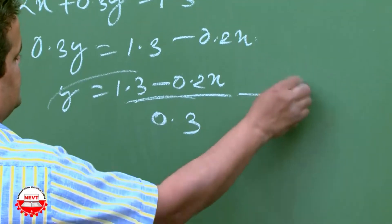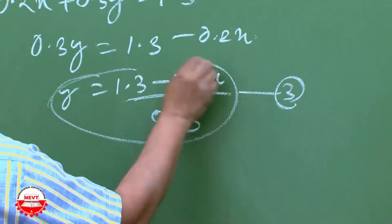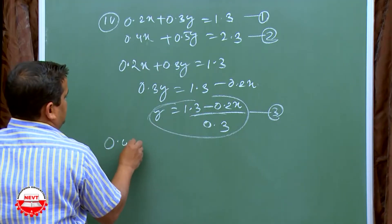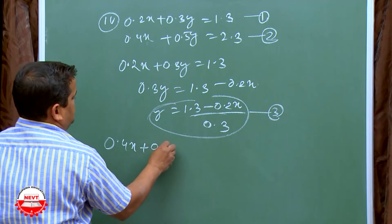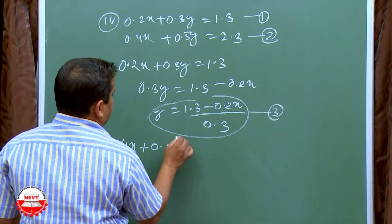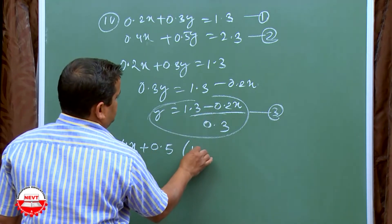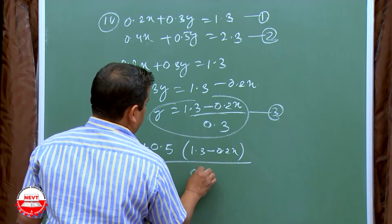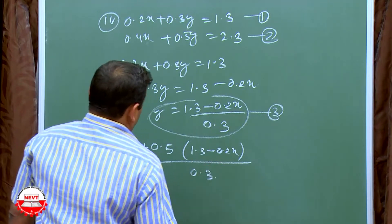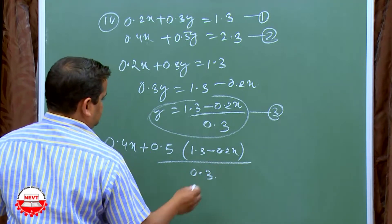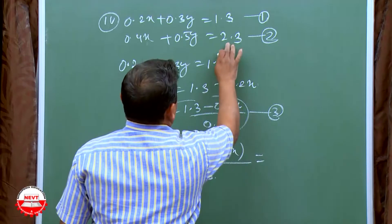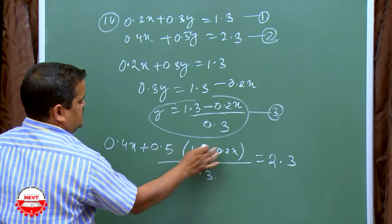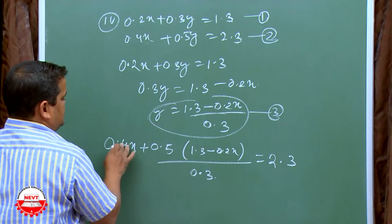Substitute equation 3 into equation 2. We get 0.4X plus 0.5 times (1.3 minus 0.2X) by 0.3, which is equal to 2.3. Now multiply through and take the LCM of 0.3 to simplify and solve for X.